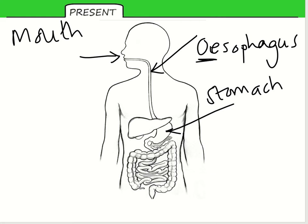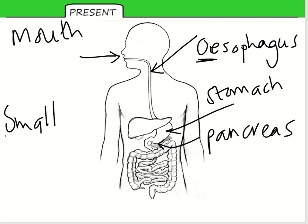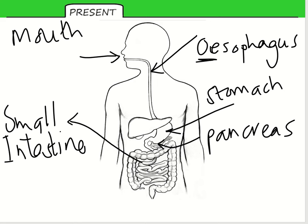That tube moves down into a J-shaped bag called the stomach, which then leads towards the small intestine — but first there is a leaf-shaped organ called the pancreas. Then it moves into the small intestine, the squiggly bits in the middle. The small intestine is made of two parts: the first is called the duodenum, and then we've got the ileum.